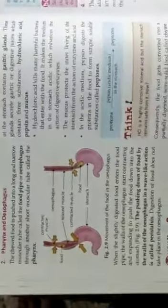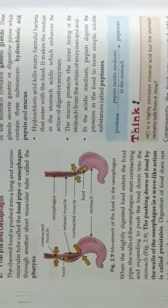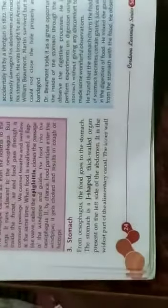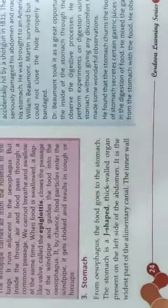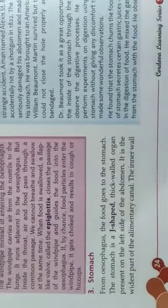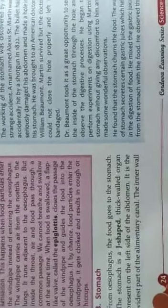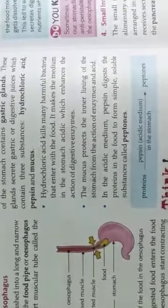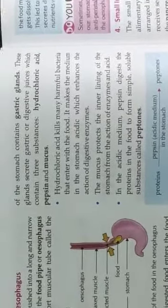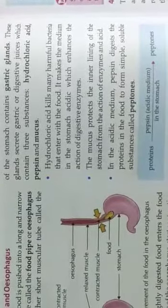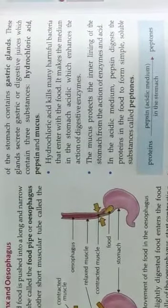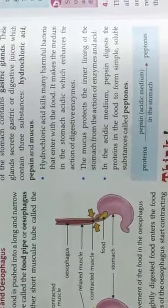The inner wall of the stomach contains gastric glands. These glands secrete gastric or digestive juice, which contain three substances: the hydrochloric acid, pepsin, and mucus.